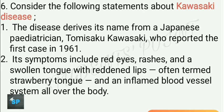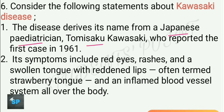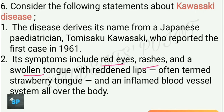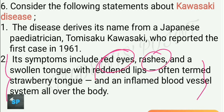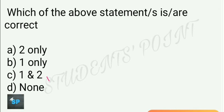Next question: Consider the following statements about Kawasaki disease. The disease derives its name from Japanese pediatrician Tomisaku Kawasaki who reported the first case in 1961 — this statement is correct. Its symptoms include red eyes, rashes, a swollen tongue with red lips often termed a strawberry tongue, and inflamed blood vessels all over the body — this is also correct. So C is the right answer.